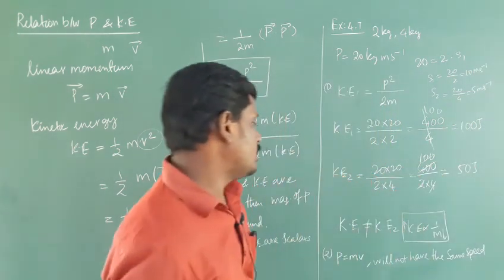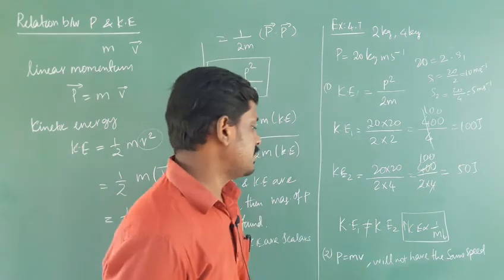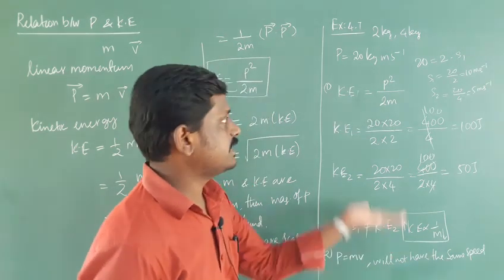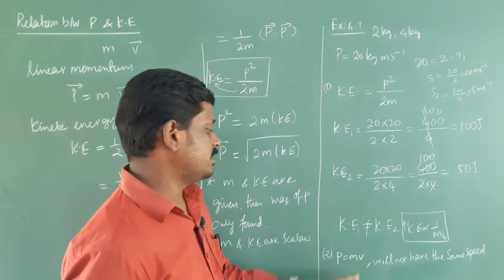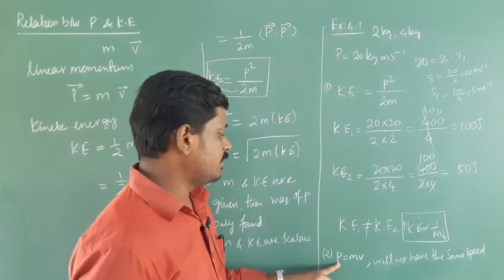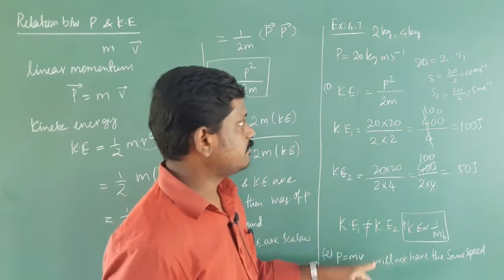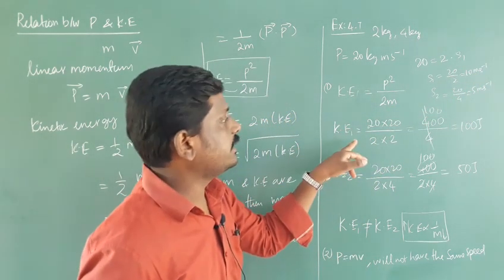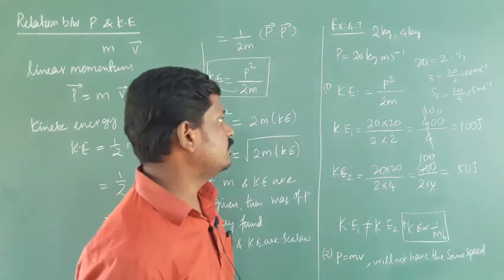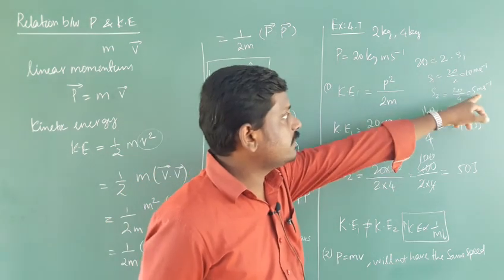So the two masses will not have the same speed. They have the same momentum but different velocity. First particle has 10 meter per second. Velocity is more means kinetic energy is also more, because kinetic energy is equal to half mv square. Here the velocity is less because mass is more.